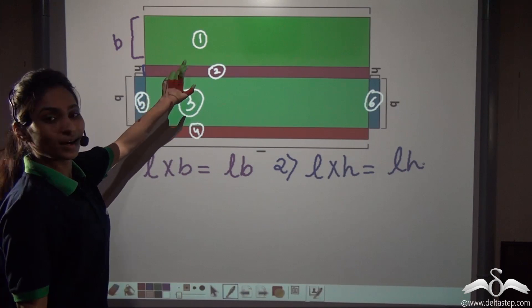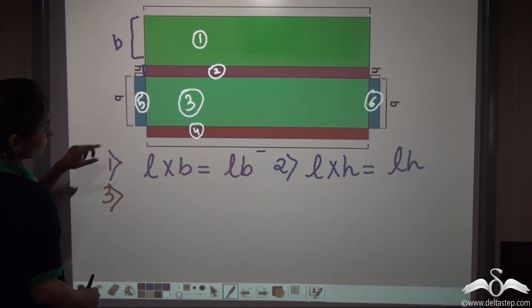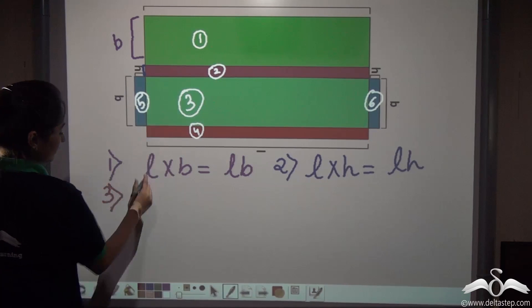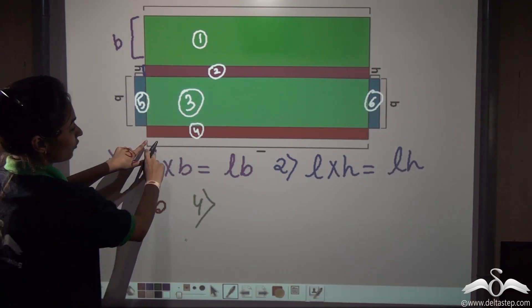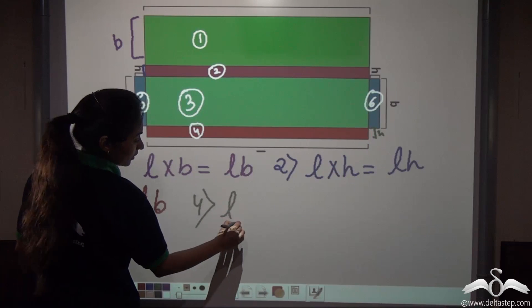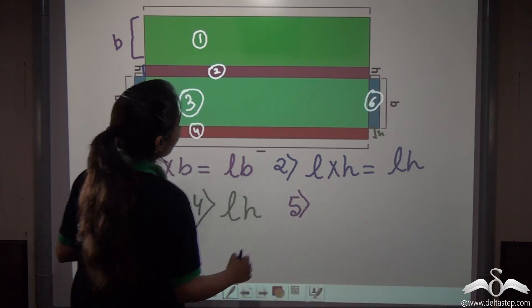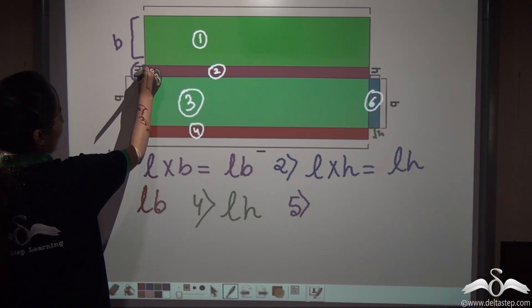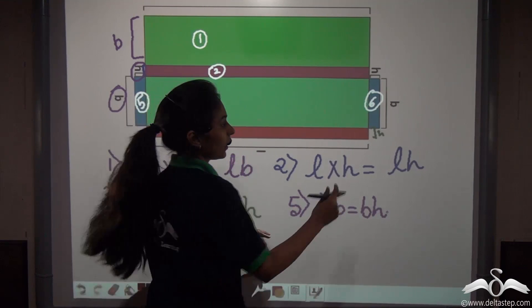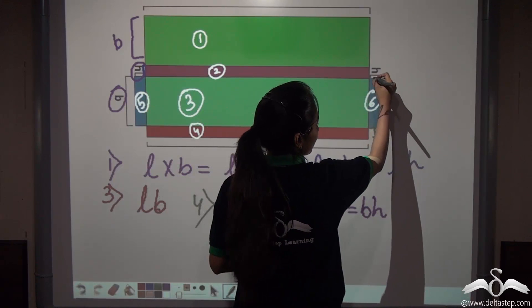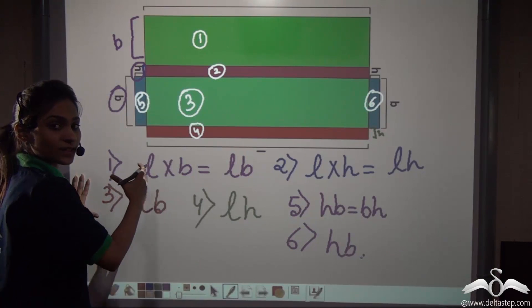We have found out the areas of surfaces one and two. Similarly, we will find out the area of three, four, five and six. Surface three has the same dimensions as surface one — length and breadth, so LB. Surface four has length and height, so LH. The fifth surface has H into B, or BH. And the sixth surface has the same dimensions H and B, so BH as well. So we are thorough with the six surfaces and the area of each.